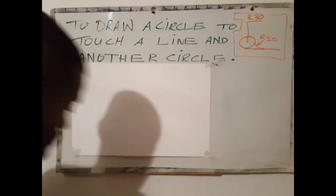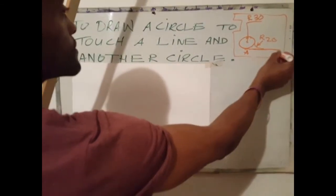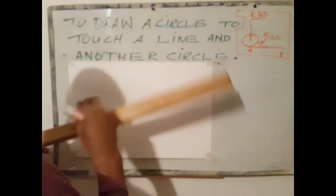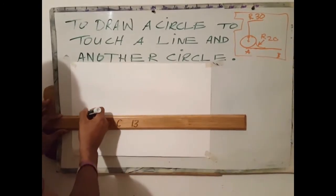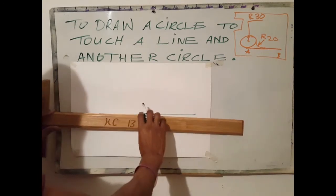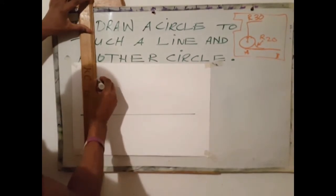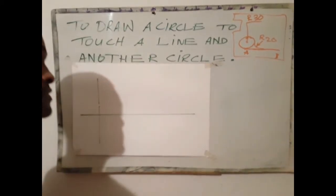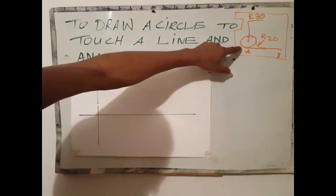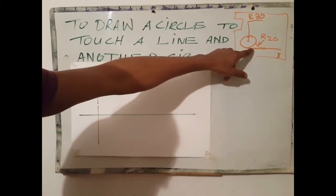The first step is to draw a horizontal line which should represent line AB. Next I'll draw a vertical line. From this diagram, the radius 30 millimeter circle rolls or touches the horizontal line.